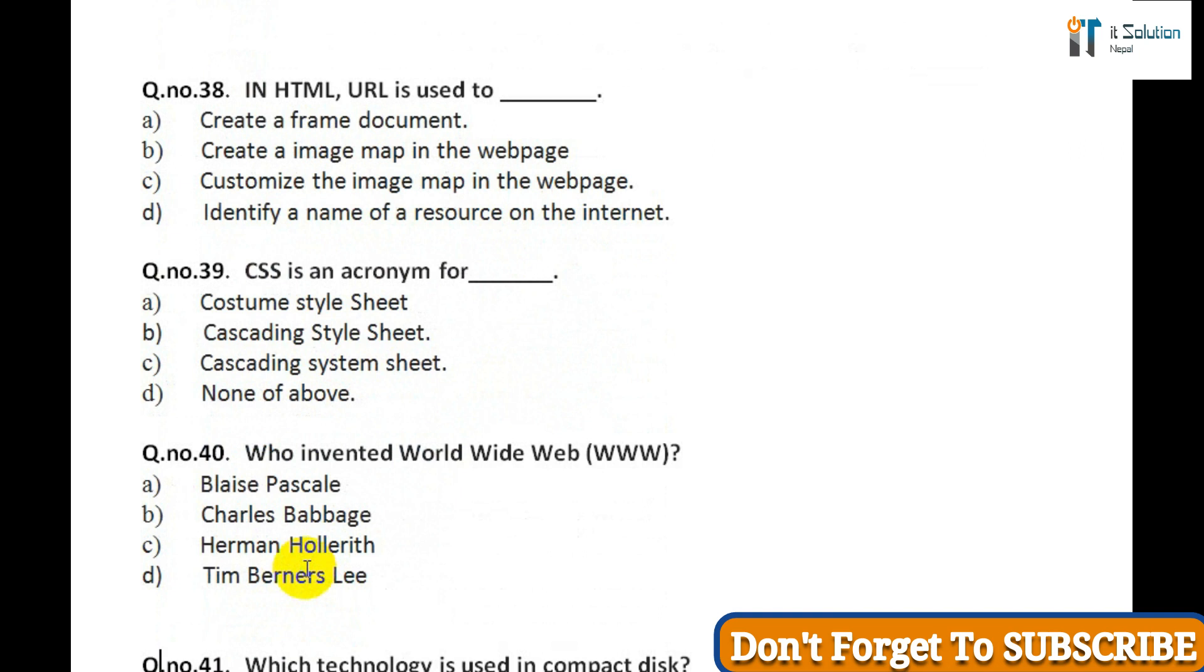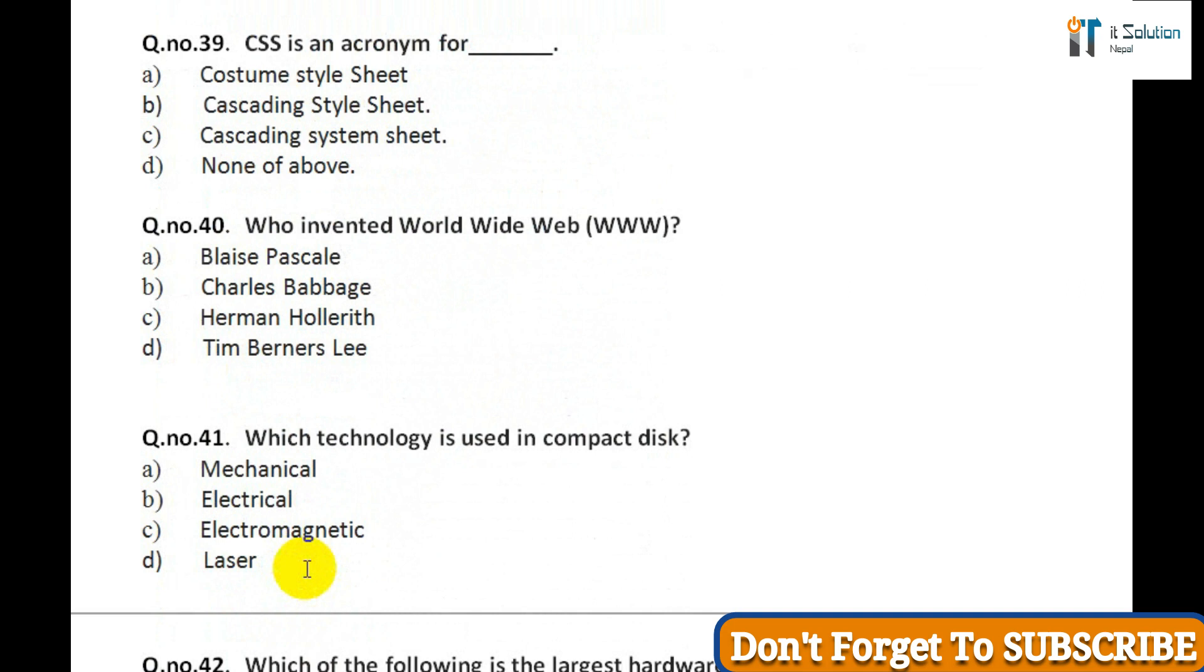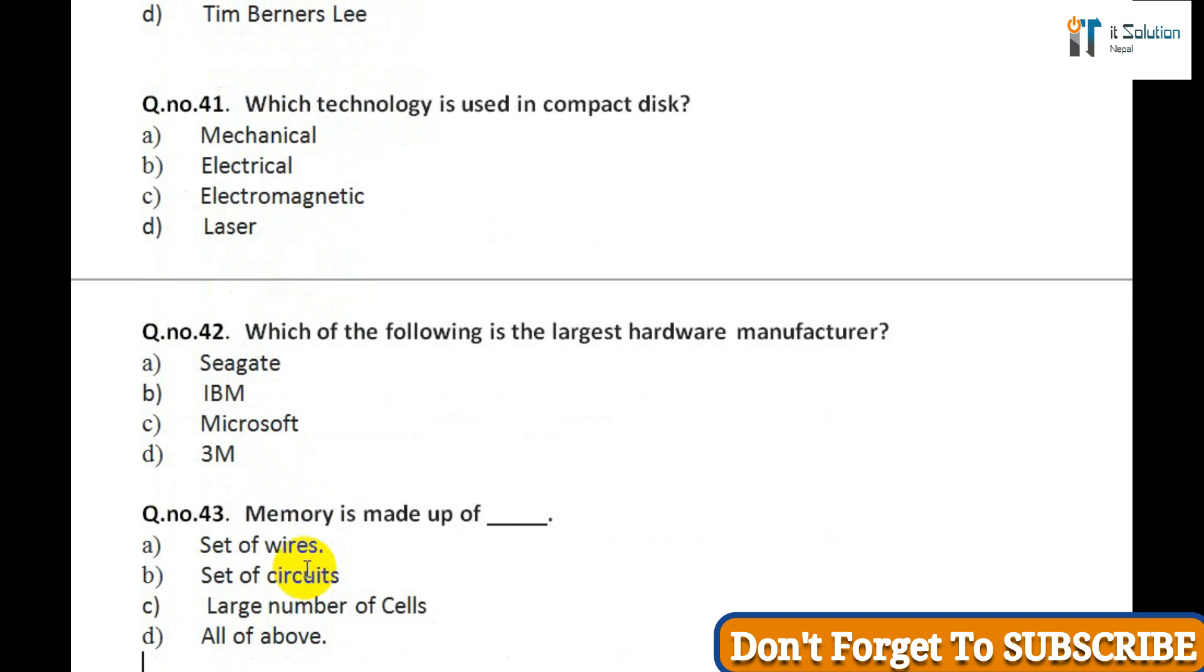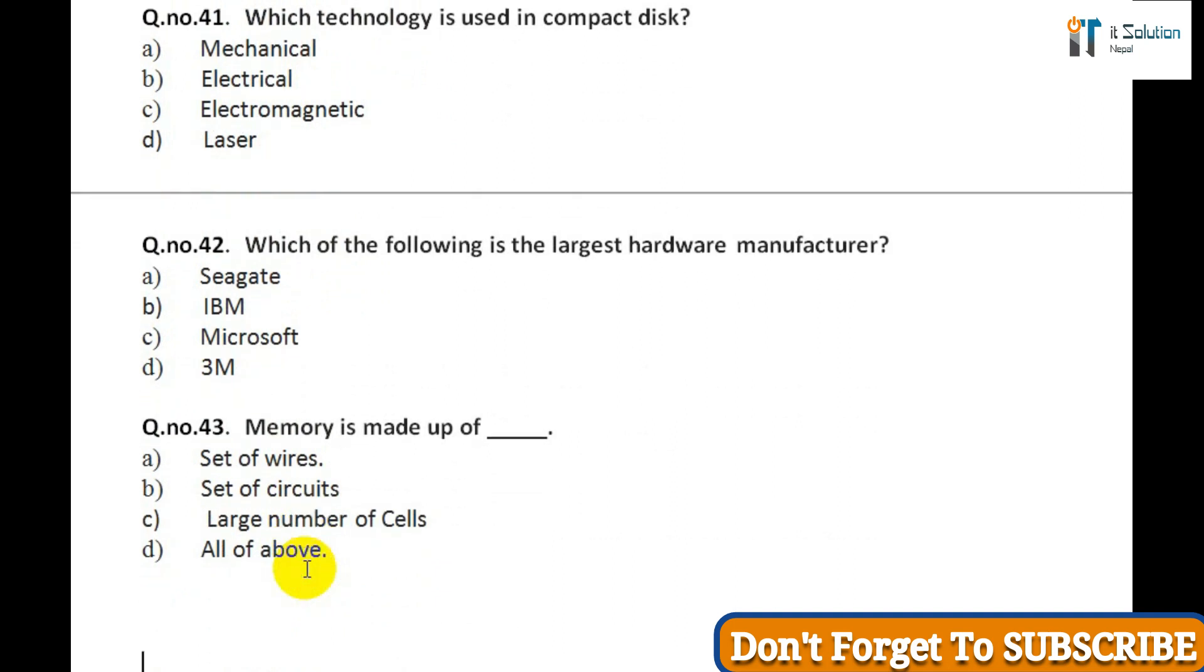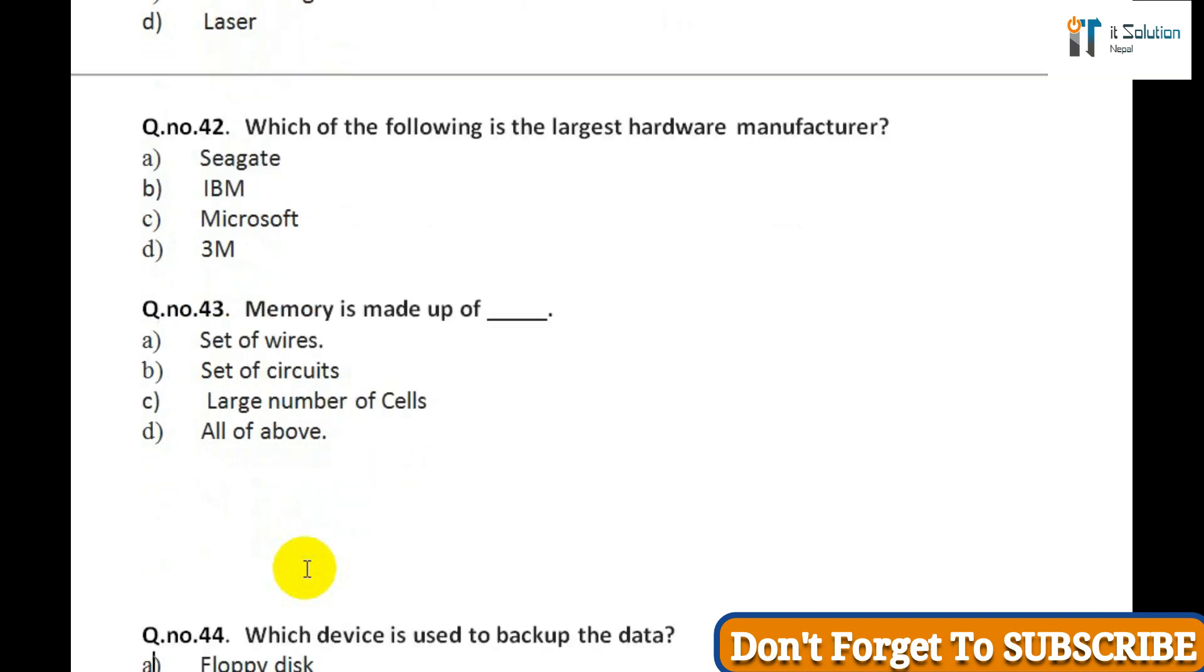Question thirty-five: The task pane shows the design that is currently being used in presentation: A) Slide style, B) Slide design, C) Slide format, D) Slide show. Question thirty-six: This refers to the way things are arranged on slide: A) Slide design, B) Slide layout, C) Slide transition, D) Rehearse. Question thirty-seven: To insert a new slide in the current presentation we can choose: A) Ctrl+N, B) Ctrl+M, C) Ctrl+O, D) Ctrl+F.